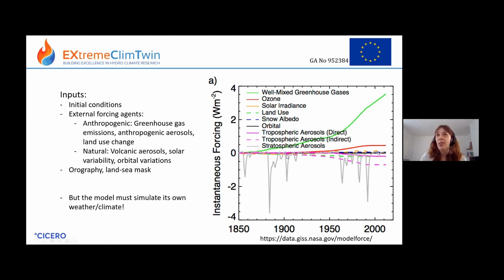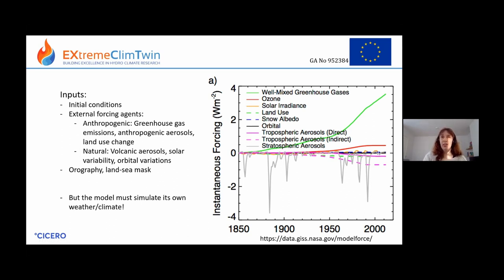The black line is orbital forcing. On the timescale of a couple of centuries, orbital forcing is not really important. But if we were interested in going really far back in the past on really long timescales, then orbital forcing would also affect the climate — things like the Earth wobbling on its axis, or to do with the shape of the Earth's orbit around the sun.